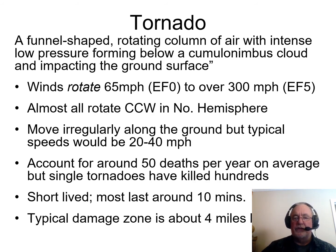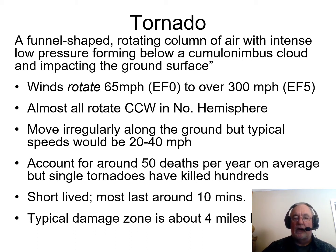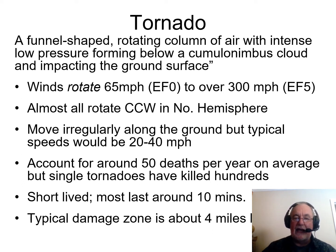Let's go with the definition. A tornado is defined as a funnel-shaped rotating column of air with incredibly low pressure, probably on the order of 600 or 700 millibars, so quite a bit lower than our average. These winds are generated from this low pressure and circulate typically in a counterclockwise direction in the northern hemisphere — 99.99999% of the time counterclockwise in the northern hemisphere.